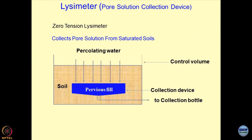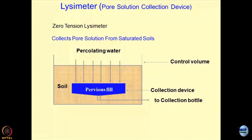You can do artificial rainfall, sprinkle water, or water-lock the whole sample by flooding it. As percolation takes place, the recompacted soil becomes saturated, and all the pore solution gets accumulated into the pervious fill. You can then drain it out to a collection bottle — similar to the vials nurses use for storing blood samples. Though it appears to be a very simple device, it can answer a lot of questions.